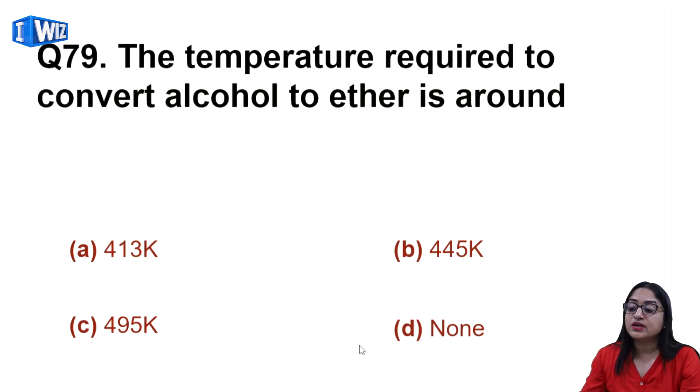Next question: the temperature required to convert alcohol to ether is 413 kelvin. At 443K it undergoes elimination to form alkene.